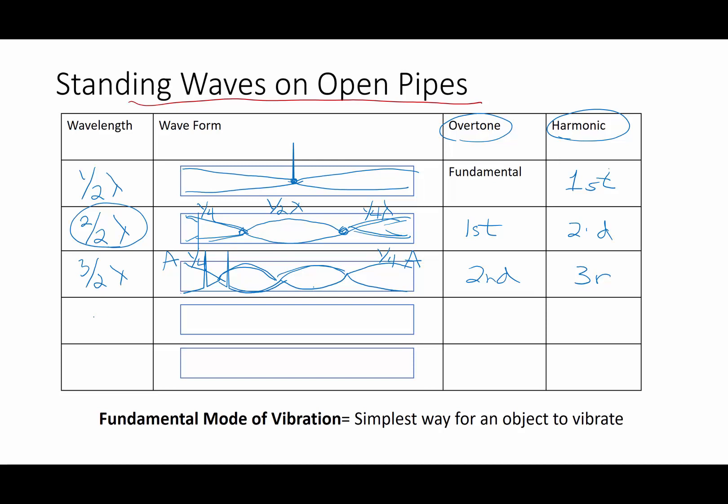The next most complex waveform, four half wavelengths, and then of course five half wavelengths, you can see the trend. So this is going to be one, two, three half wavelengths, anti-node at each end. This one is going to be one, two, three, four half wavelengths, anti-node at each end, and this will be the third and fourth overtone, and the fourth and fifth harmonic.